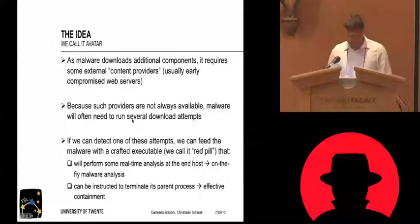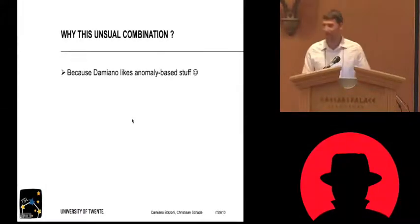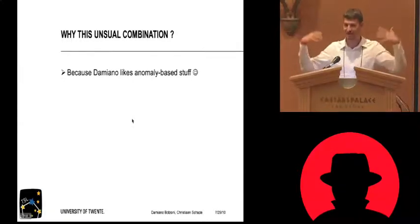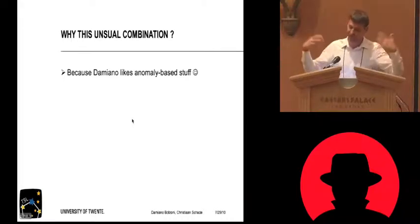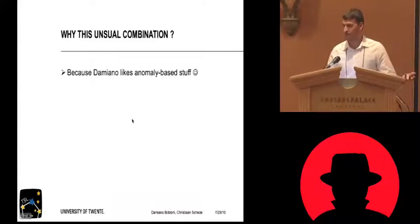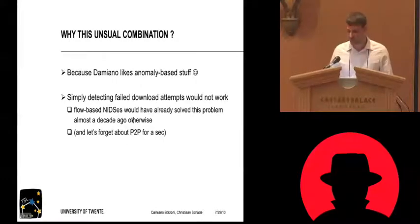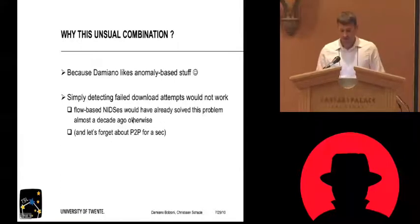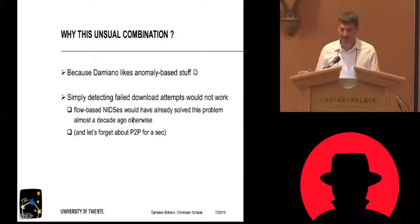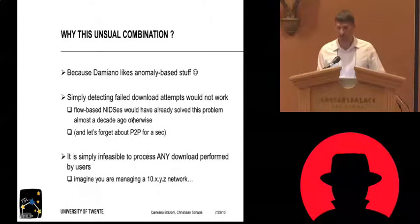It's crazy, but it works. One could wonder why this unusual combination. The first thing is because I like anomaly-based stuff — I like the concept that you detect things while they are happening, like detecting the failed download attempts. But just detecting the failed download attempts wouldn't work. If that would work, flow-based network intrusion detection systems would have already solved the problem years ago, and they didn't. We also have to forget about peer-to-peer, because peer-to-peer will screw up flow-based intrusion detection systems. There are years of research and some commercial implementations — they work up to a certain point, but they don't fully work.